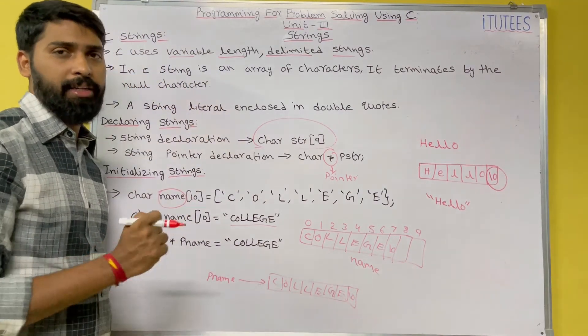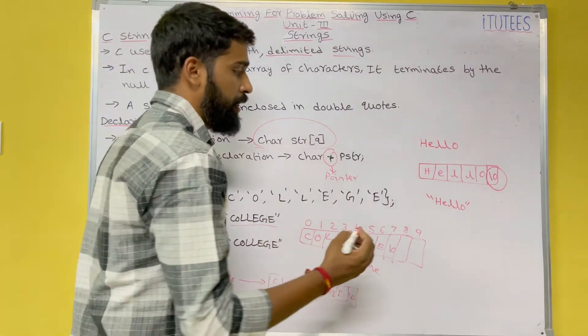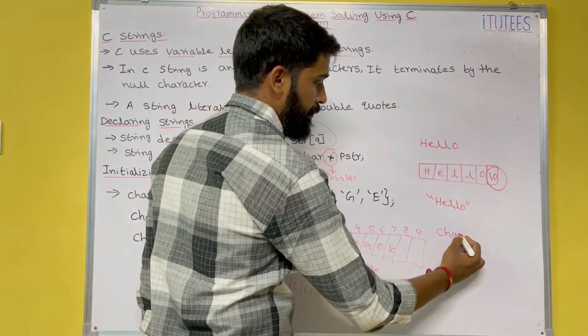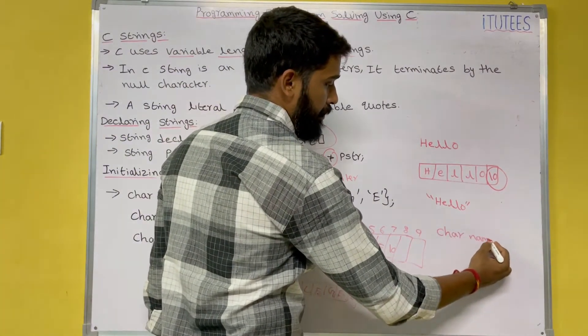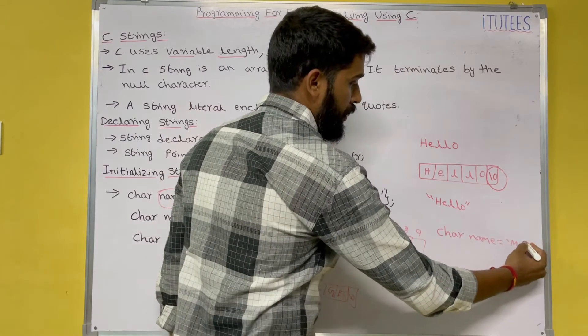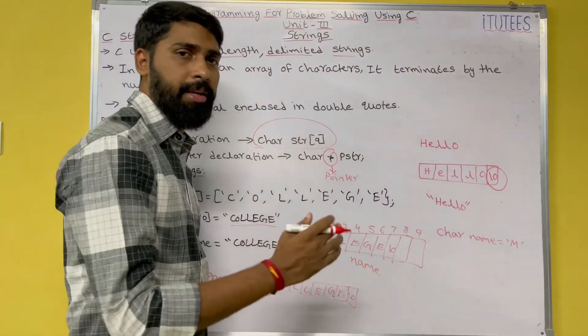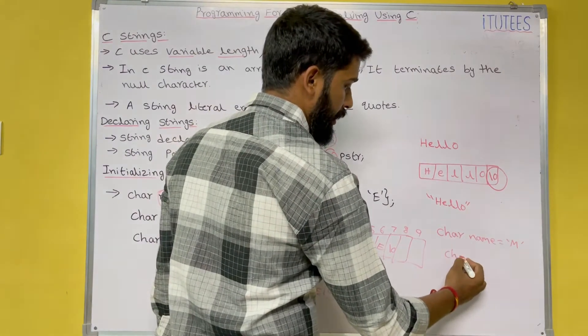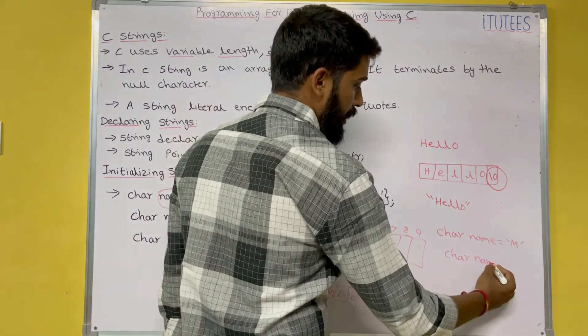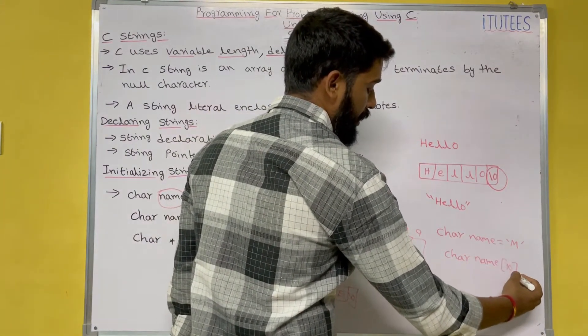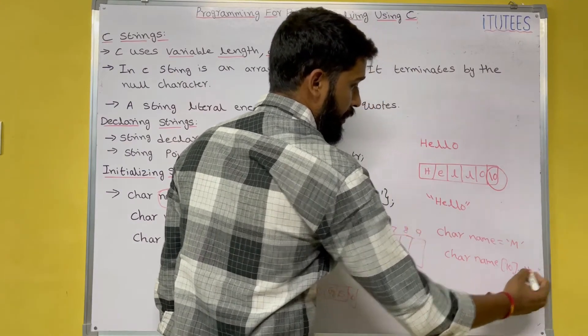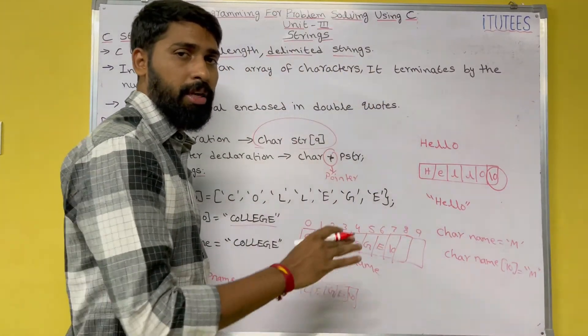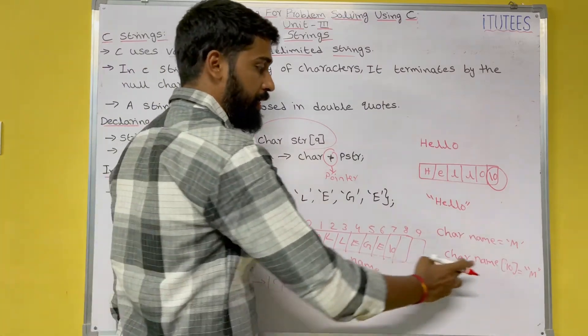So what is the difference between string and character? If I define char name equals to, in single quotation m, then it is character. If I define char name of 10 equals to, in double quotation, if I define double quotation, I am defining m. Now, it is a string.